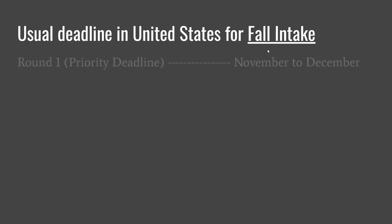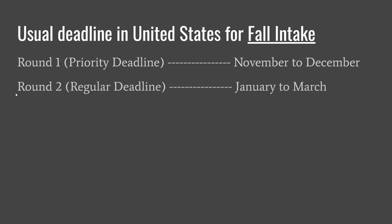For fall intake, Round 1 — which is the priority deadline — has deadlines usually in November or December, not later than December. For some universities it could go to January 15th, but not later than that. Round 2, the regular deadline for international students, runs from January to March, as late as March, but not later.